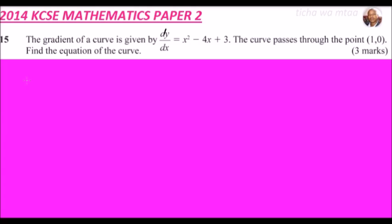Now, this is the gradient. To get the gradient we differentiate the function, so to get the function we do the reverse — we integrate the gradient function. So we integrate x² - 4x + 3 with respect to x.